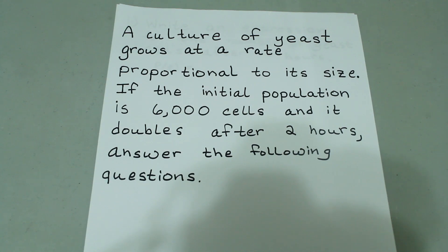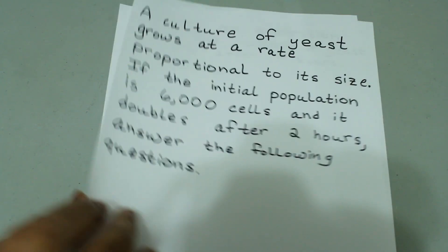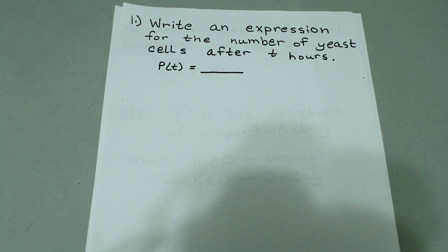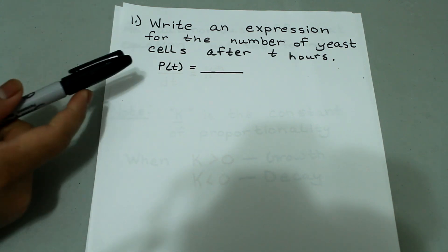The question states: a culture of yeast grows at a rate proportional to its size. If the initial population is 6,000 cells and it doubles after 2 hours, answer the following questions. The first question we have is write an expression for the number of cells after t hours, and the answer is going to be in the form of P(t) equals.